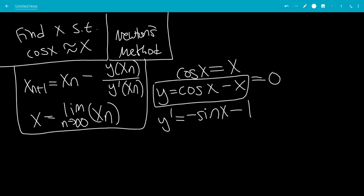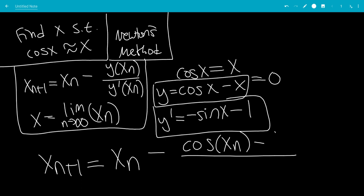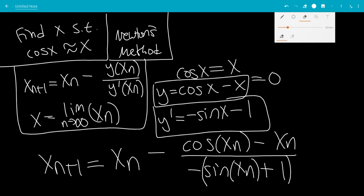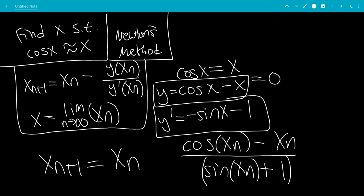So now let's plug all this stuff into this first formula that we have. So that would be x to the n plus 1 equals xn minus y of xn will be this function. So this will be cosine of xn minus xn all over y prime of xn. So we plug in xn to this function. So this will be minus sine of xn minus 1. Of course, we can factor out the negative on the denominator, leaving us with negative parentheses sine of xn plus 1. And the negative and the negative will cancel, leaving us with positive.